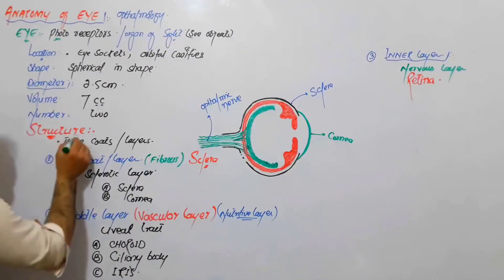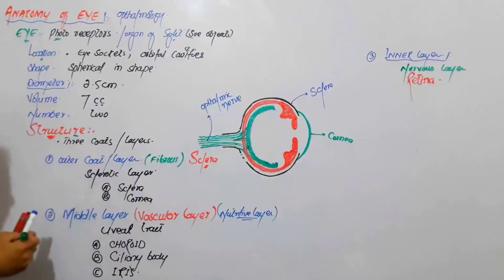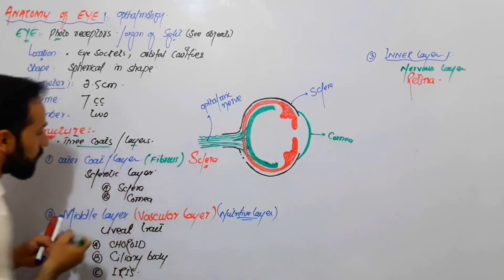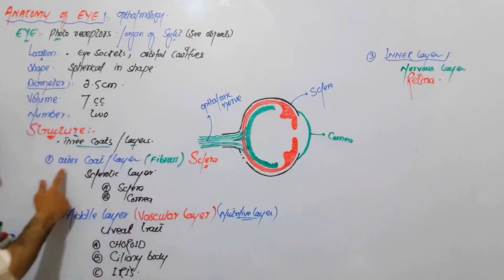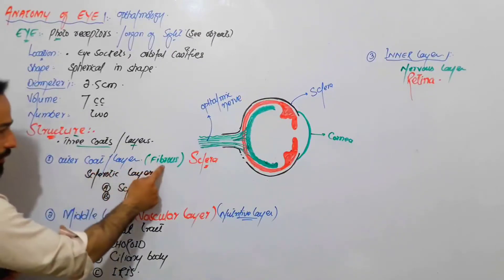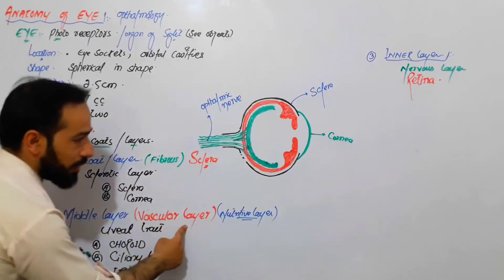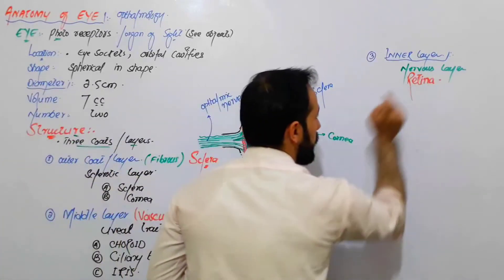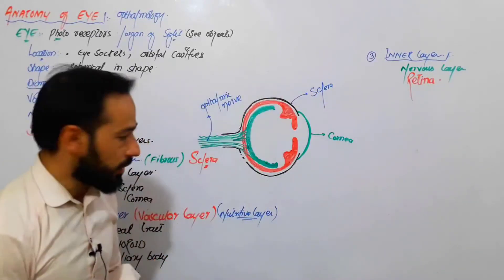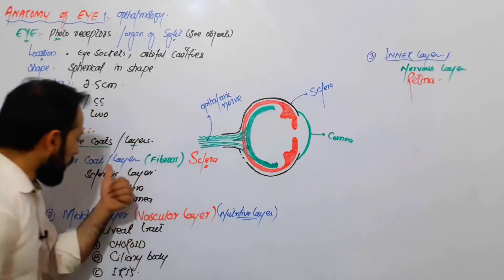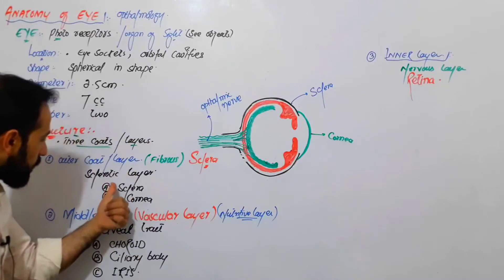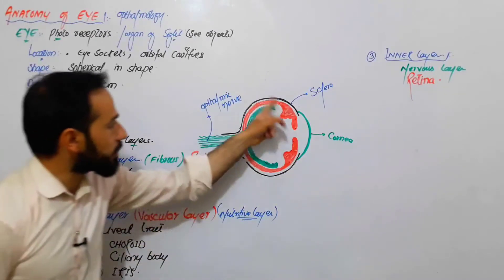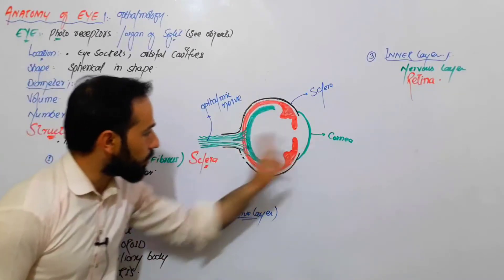Structurally, the eye is composed of three layers or three coats: the outer fibrous layer, the middle vascular layer, and the inner nervous layer or the neural layer. The outer layer is called the sclerotic layer, which is composed of two parts — the sclera and the cornea.